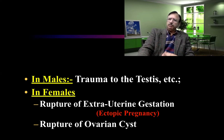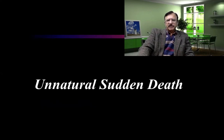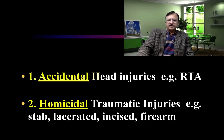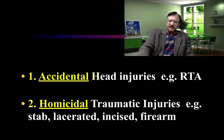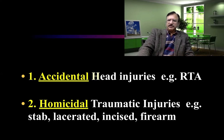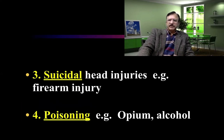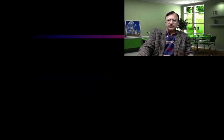Causes of unnatural sudden deaths can be accidental, homicidal, or suicidal. Accidental causes include road traffic accidents or any accidental injury. Homicidal causes involve killing by another person with traumatic injury such as stab wounds, lacerations, incised wounds, or firearms. Suicidal causes can include firearm injury, and poisoning such as alcohol or other poisons, which can also be homicidal or accidental.